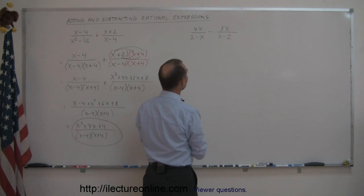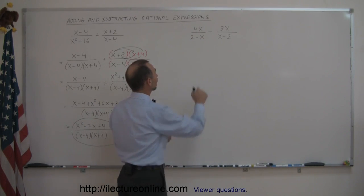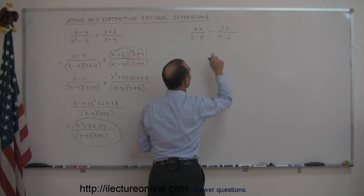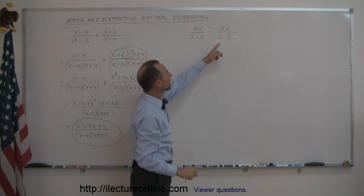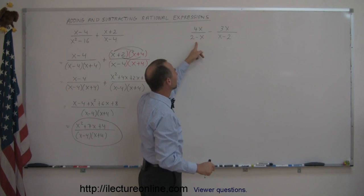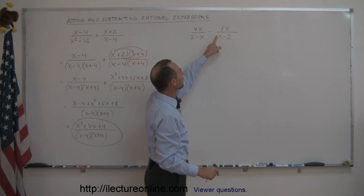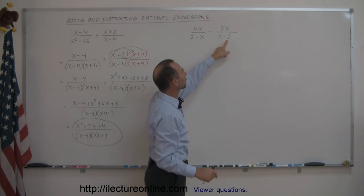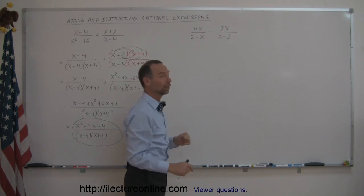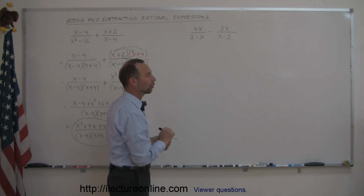Now let's look at our next example. At first sight, the denominators almost look the same — here you have (2 − x) and there you have (x − 2). The question is: how can you make this denominator look like that denominator? If you multiply the denominator by negative 1, then you get negative x plus 2, which is the same as (2 − x). So the idea is to multiply the denominator by negative 1.